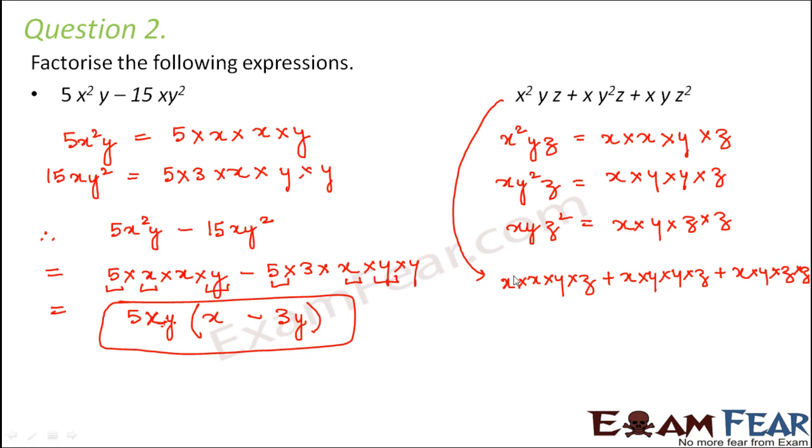Now what are the common factors that we have? x is a common factor, y is also a common factor, z is also a common factor. So let's take the common factors out, that is xyz.